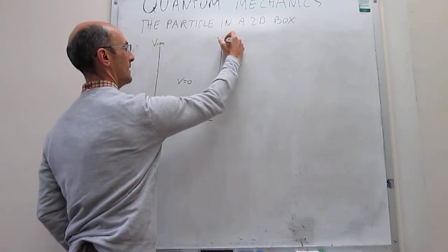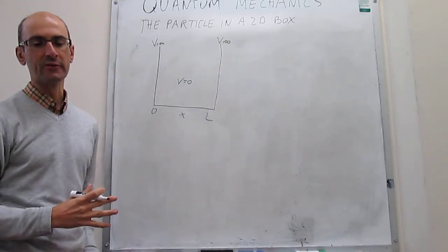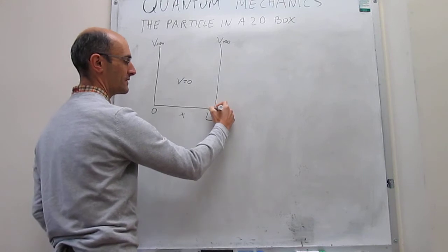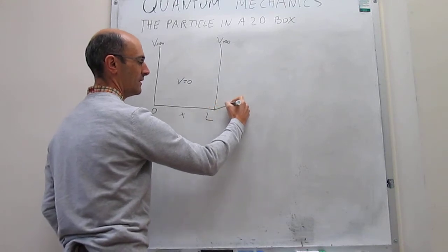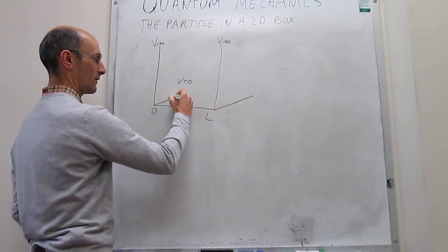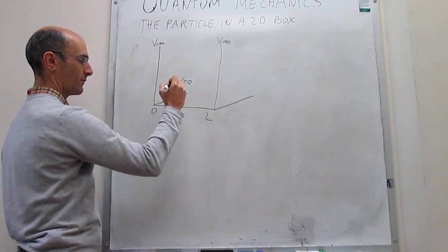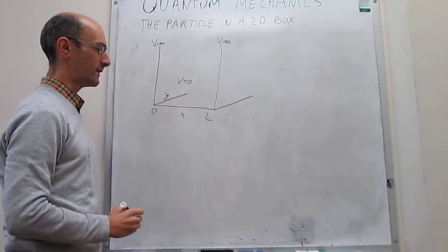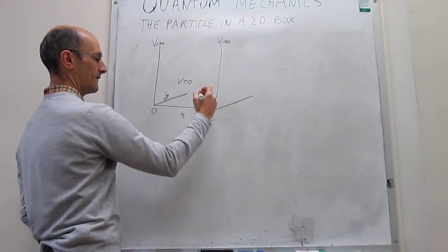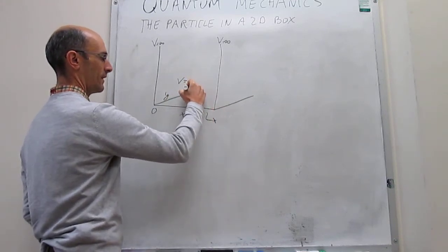The particle in a 2D box model is not very different from the particle in a 1D box model. The only thing that is significantly different is that the motion now is in two dimensions, so the particle can move in a plane. That plane we're going to call the XY plane, and then the box is going to have two lengths, Lx and Ly.